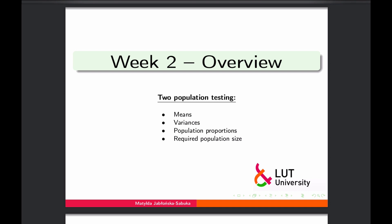When we talk about two-population testing, it's also important to mention population proportions, because a population proportion is a specific type of mean value, and finally the required population size. For instance, if you have a presumably infinite population from which you'd like to take a sample to get a reliable answer to some question, you'd like to know what the minimal population size should be in order to achieve a given confidence interval.